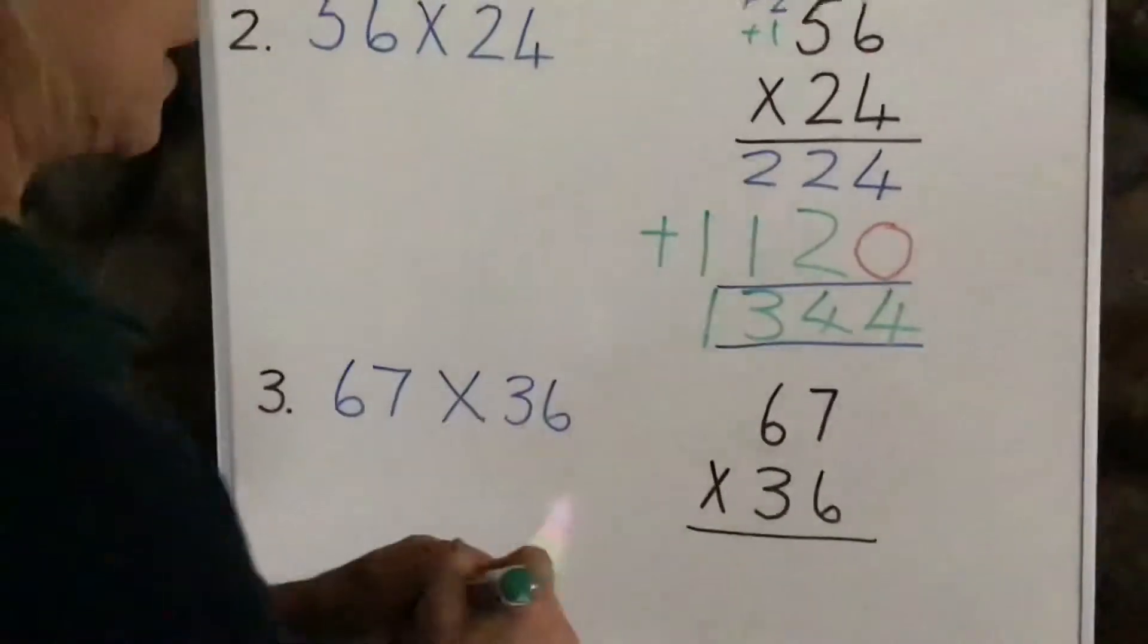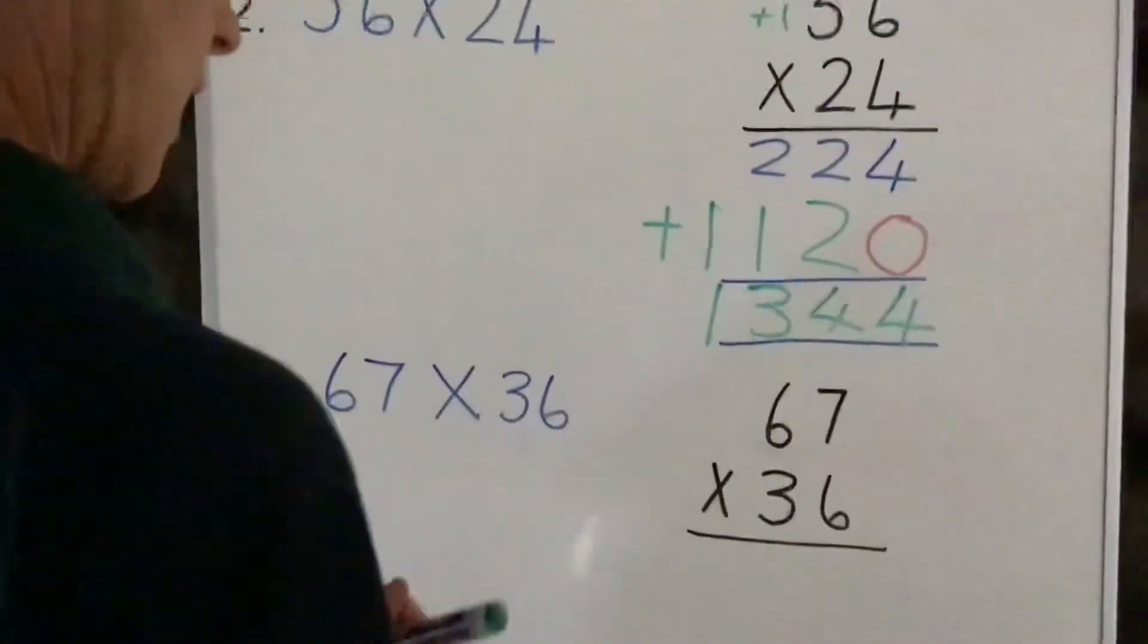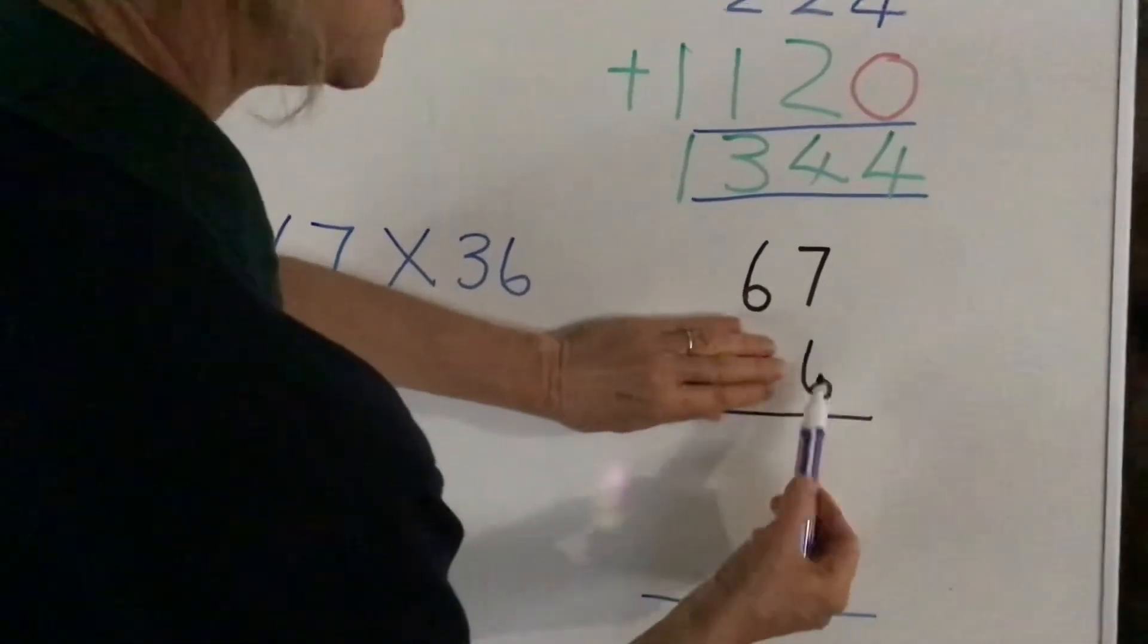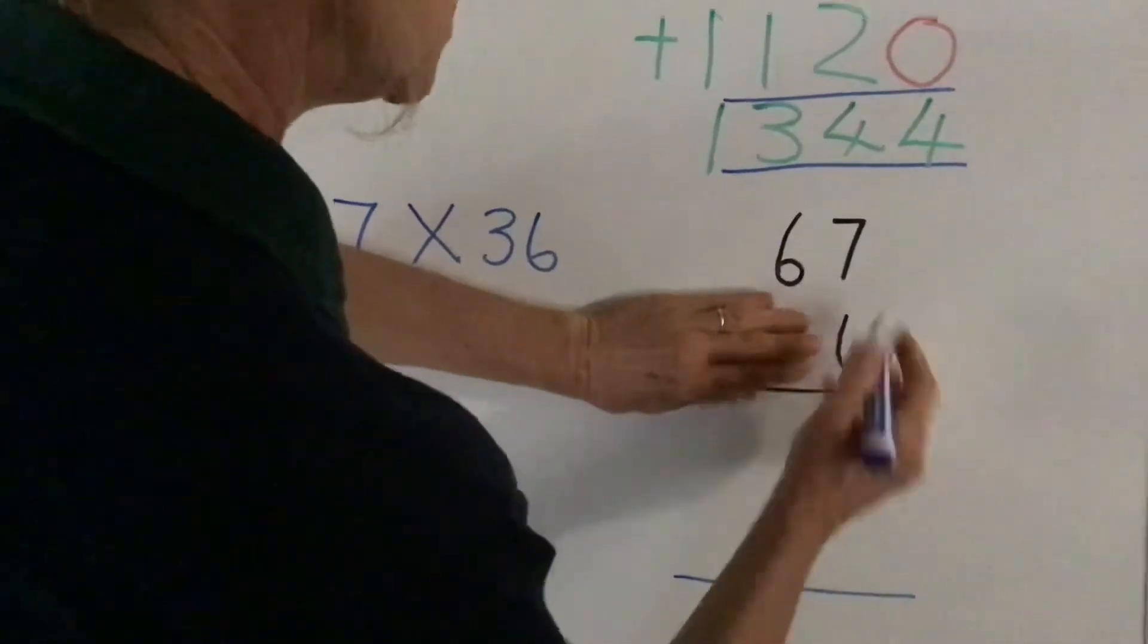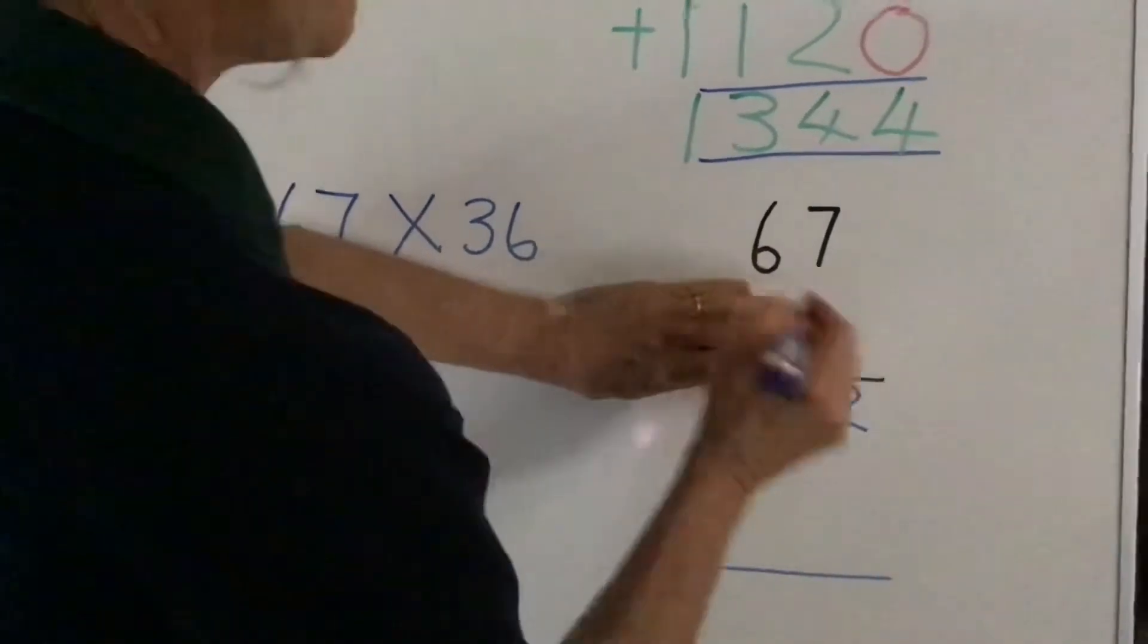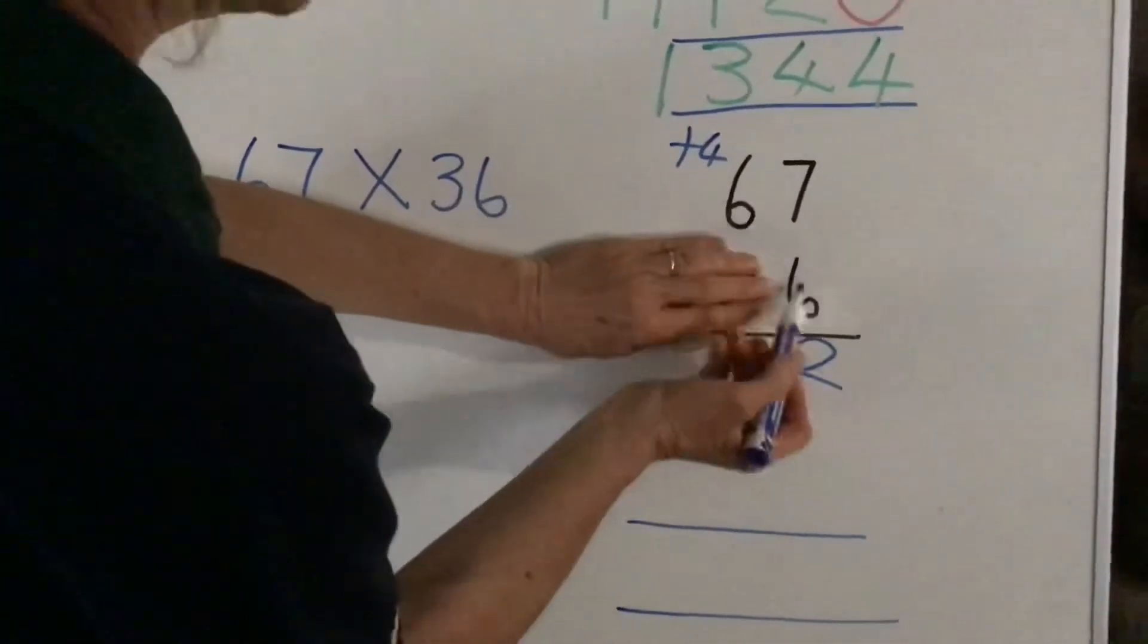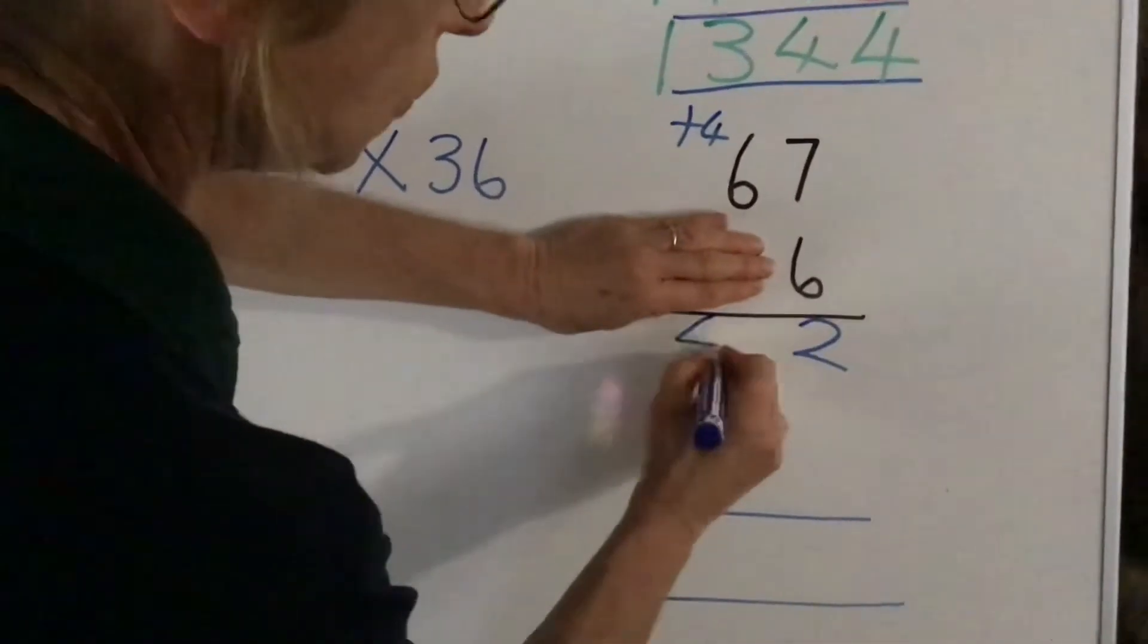Okay, the very last example, let's have a look at this one now. So once again, we use our units first. Six times seven is 42. Put on our unit, carry our 10, which is plus four here. Six times six is 36, plus four is 40.